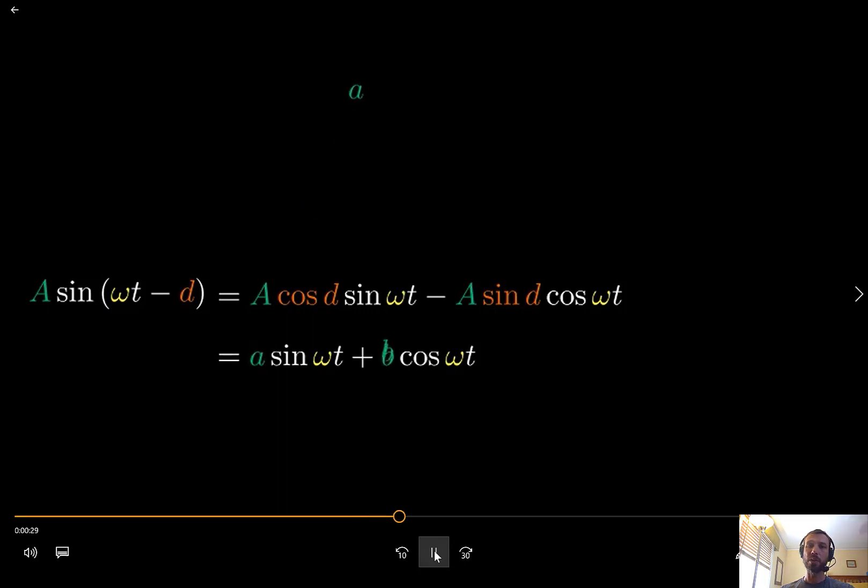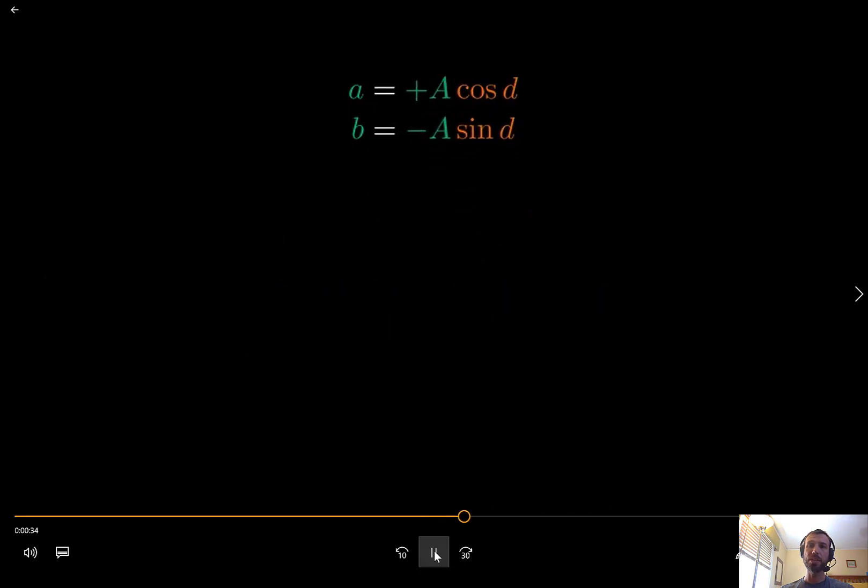If we now equate the coefficients of like terms on both sides of this new equation, we receive a system of two equations for the two unknowns big A and little d.